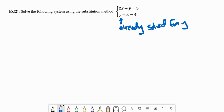This means that anywhere we see y in the other equation, we can replace it with x minus 4. And this gives us our new equation.